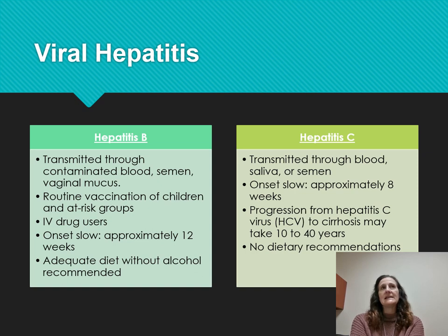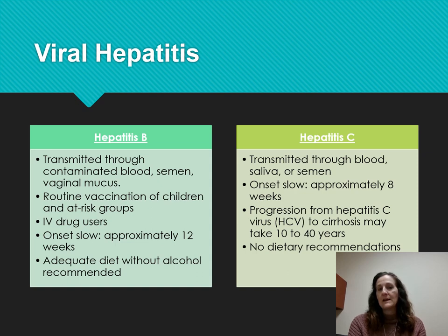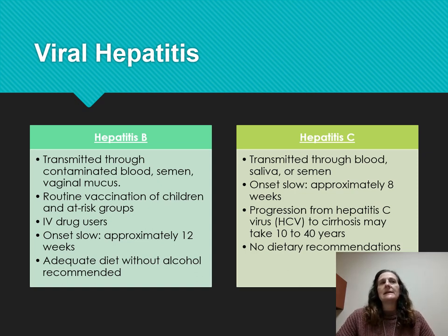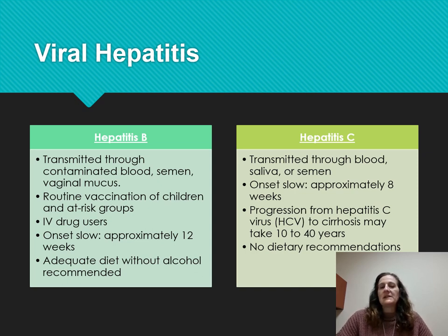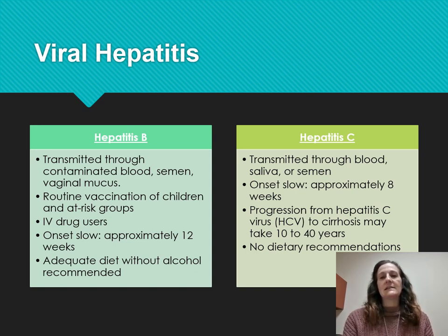Hepatitis C is the most common and prevalent in the United States. It is transmitted through blood, saliva, and semen, with a slow onset. Hepatitis C can lead to cirrhosis of the liver. We typically see it in IV drug abuse, acupuncture, and tattoos. There is also a risk of cirrhosis and carcinoma.